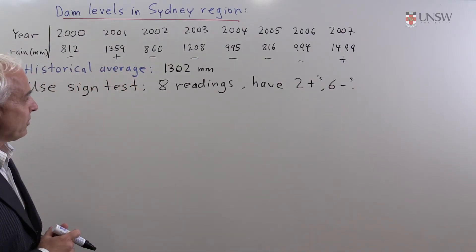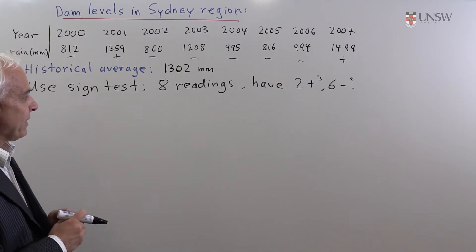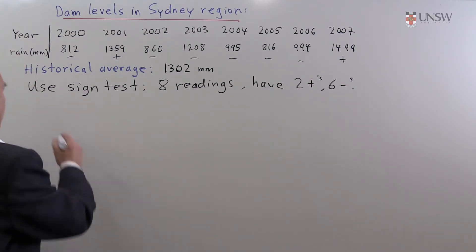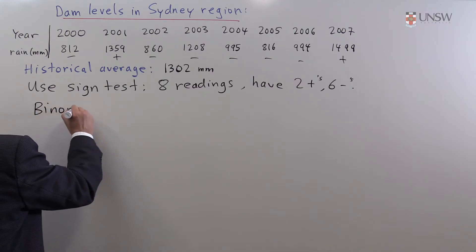Well, in order to figure that out, we have to look at the underlying model here for tossing a coin. So the binomial distribution is the relevant one.